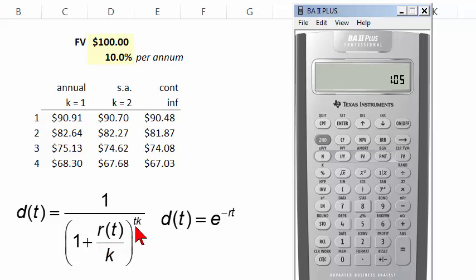And I'm going to raise it to the product of the t times k. So here's my raise to power key, Y to the X. I'm going to open parentheses and multiply the three years multiplied by two, two periods per year under semi-annual, close that parentheses. So my exponent is 6.